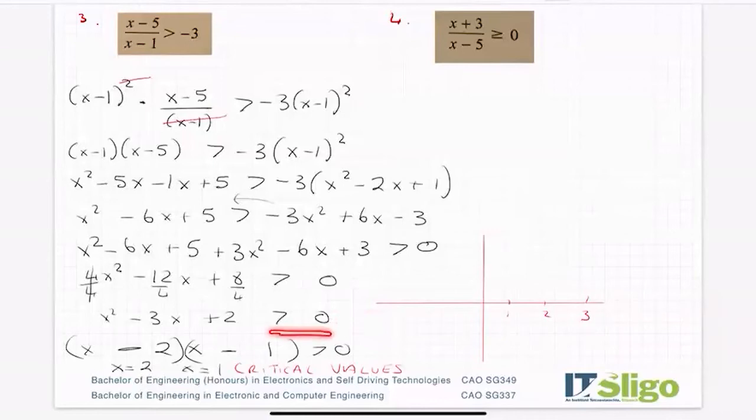Where is the graph greater than 0? Is this a smiley face or a sad face? Well, it's a smiley one because my x squared is positive.